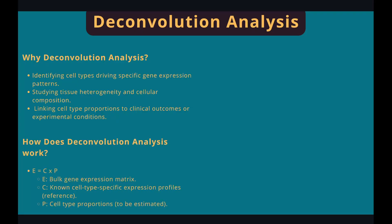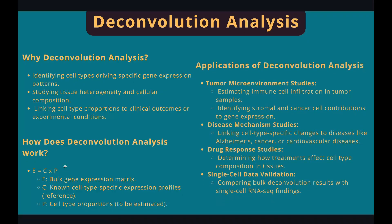The algorithm assumes that bulk gene expression is a weighted sum of individual expression profiles from cell types, and it estimates the cell type proportions by solving this equation. Deconvolution analysis is applied to many medical fields, like tumor microenvironment studies, disease mechanism studies, drug response studies, and single cell data validation.